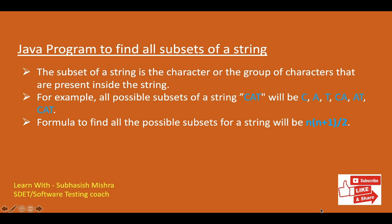Here you can see one example. If 'cat' is a string, then different subsets of this string will be: c, a, t, then ca, at, and cat. So you need to find all these possible subsets through a Java program.